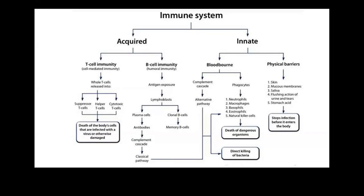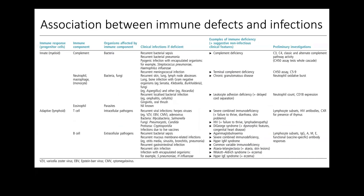Each component — T cells, B cells, complements, phagocytes — can be deficient and each one can give rise to immune deficiency. If you have complement deficiencies, you are more prone to bacterial infections such as Neisseria or Streptococcus. Problems with neutrophil count or function also lead to bacterial infections. T cell problems lead to viral and fungal infections that tend to be more severe. B cell problems reduce antibody production, leading to chest and sinopulmonary infections.